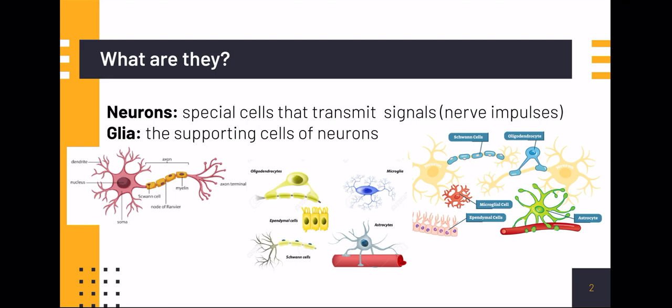The picture on the left is a picture of a neuron, the picture in the middle is glia, and the picture on the right is basically the glia on the neuron.